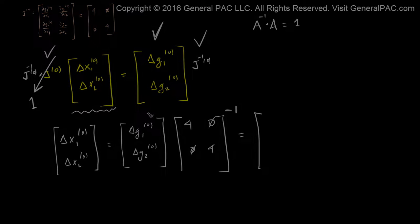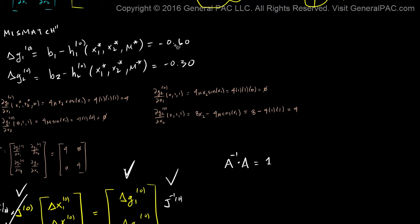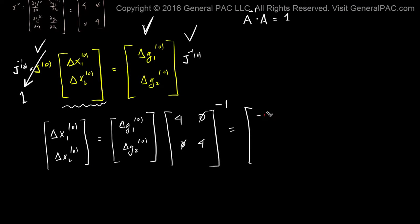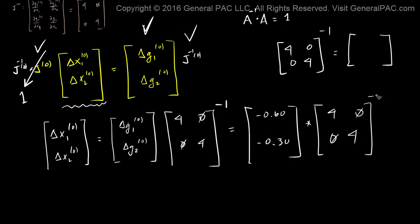So now let's put these values in. Delta g1 for the zeroth iteration is equal to negative 0.60. Delta g2 for the zeroth iteration is equal to negative 0.130. Multiply that, inverse.